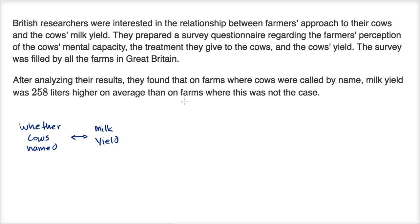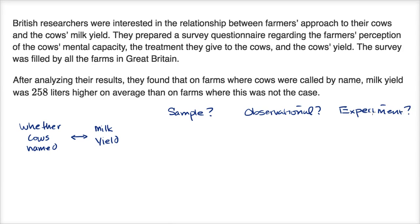Let's think about what type of statistical study this is. Is this a sample study, an observational study, or an experiment? A sample study tries to estimate a parameter for a broader population. Here, they're not estimating a parameter — they're trying to see the connection between two variables. That brings us to observational study, because that's what an observational study is all about: can we draw a positive or negative correlation between variables based on observations? They surveyed a population — the farmers in Great Britain — and drew a connection between these variables. So this is clearly an observational study.